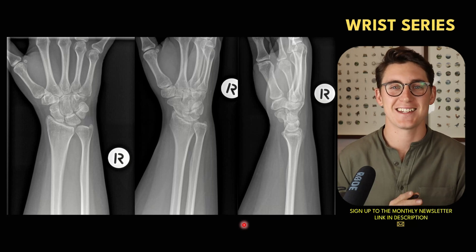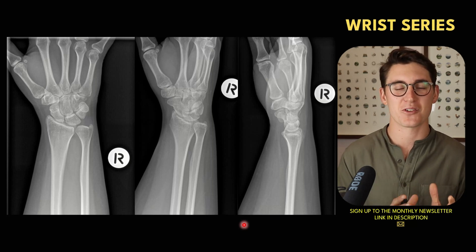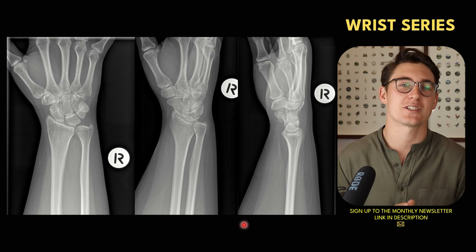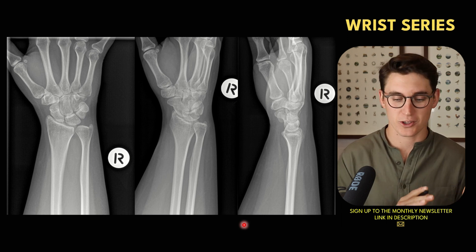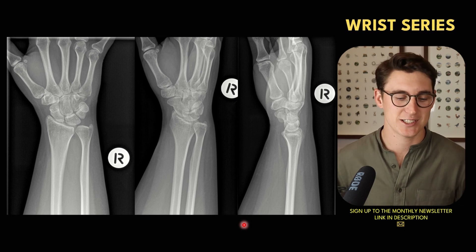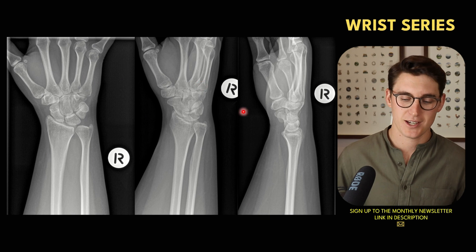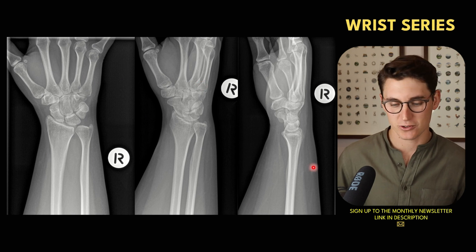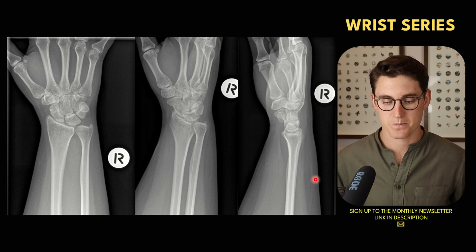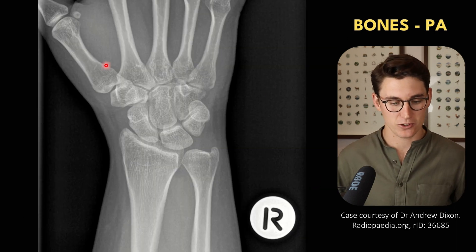Hello everybody and welcome back to another anatomy tutorial. Today we're going to be looking at the bones of the wrist as well as the alignment of the wrist on a wrist radiograph. We'll look at the three main projections that make up our wrist series: our AP view, our oblique view, and our lateral view. Let's start by having a look at our AP view.